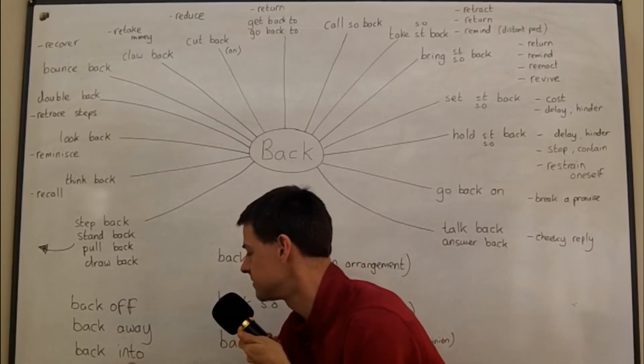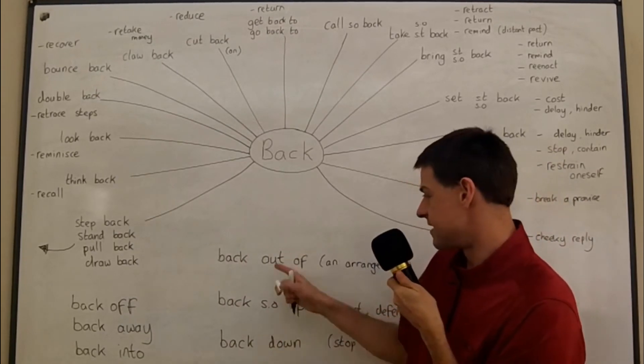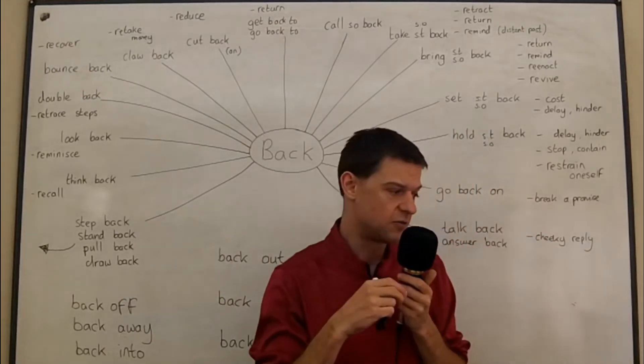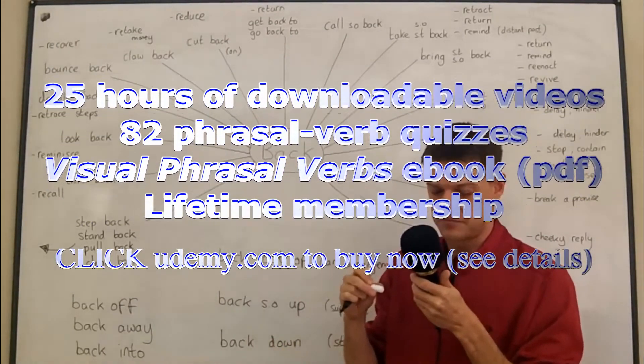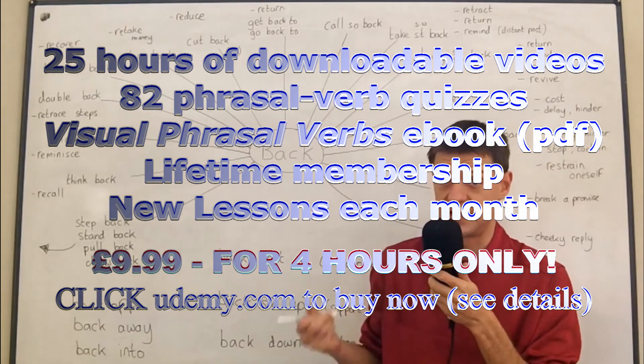And I hope you remember from a few other lessons these three phrasal verbs: you can back out of an arrangement, which means usually at the last minute you suddenly tell people that you can't go or you can't join in this plan. So maybe your friends invite you to a wedding, but at the last moment you back out.